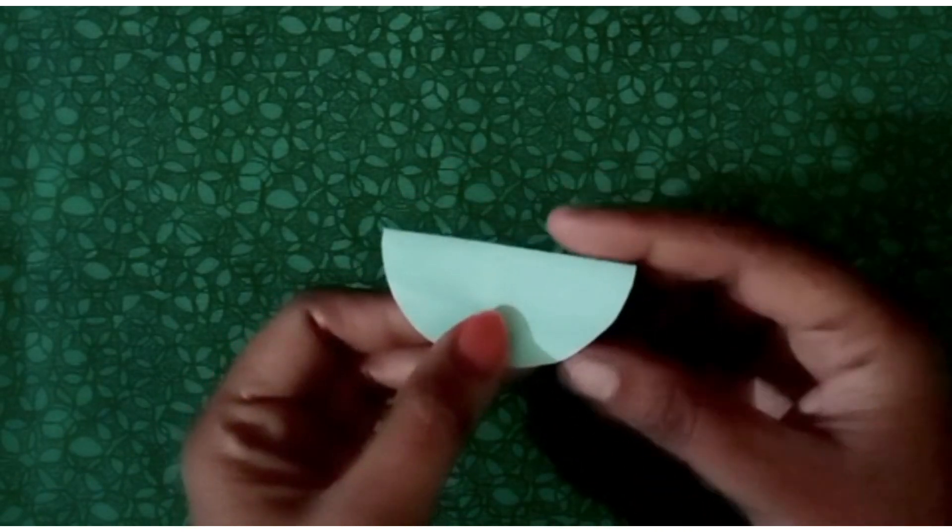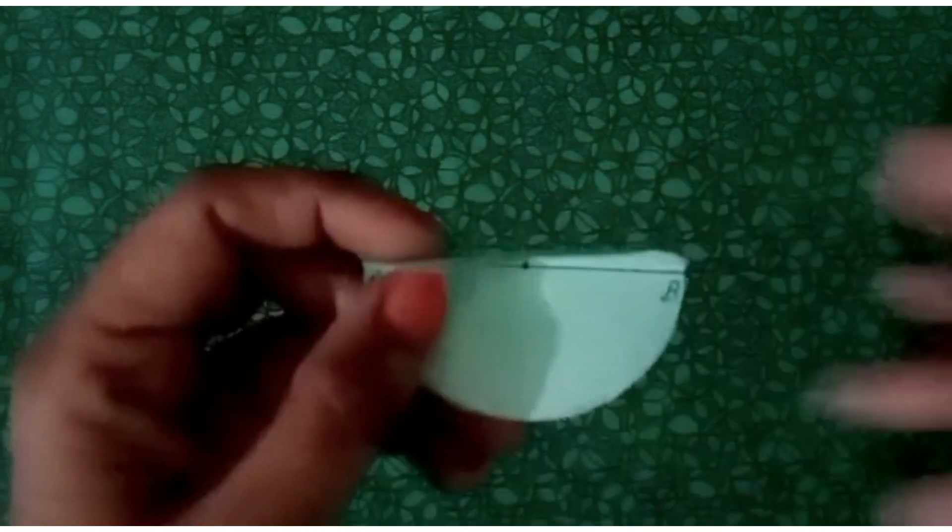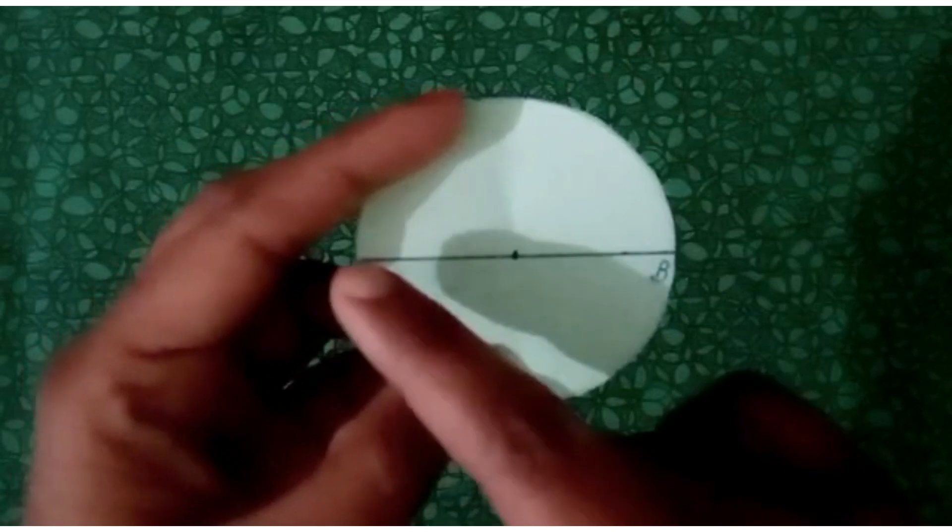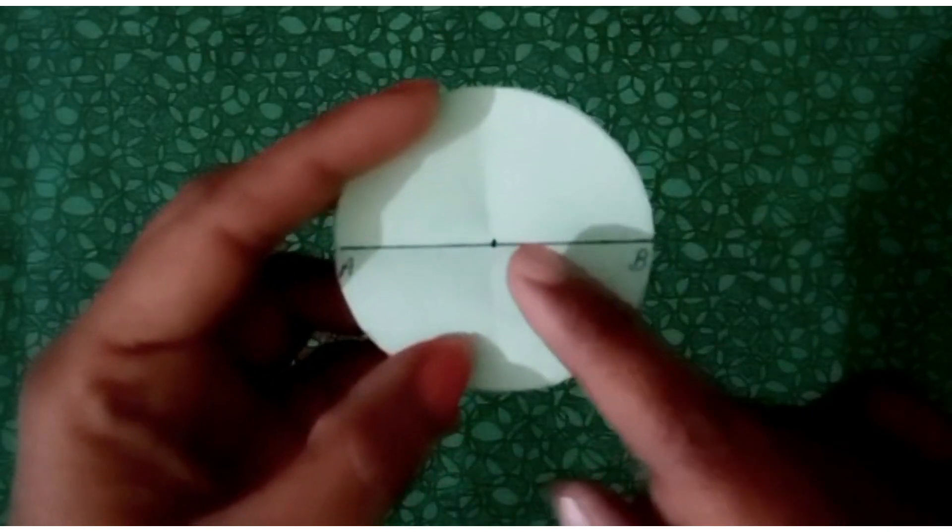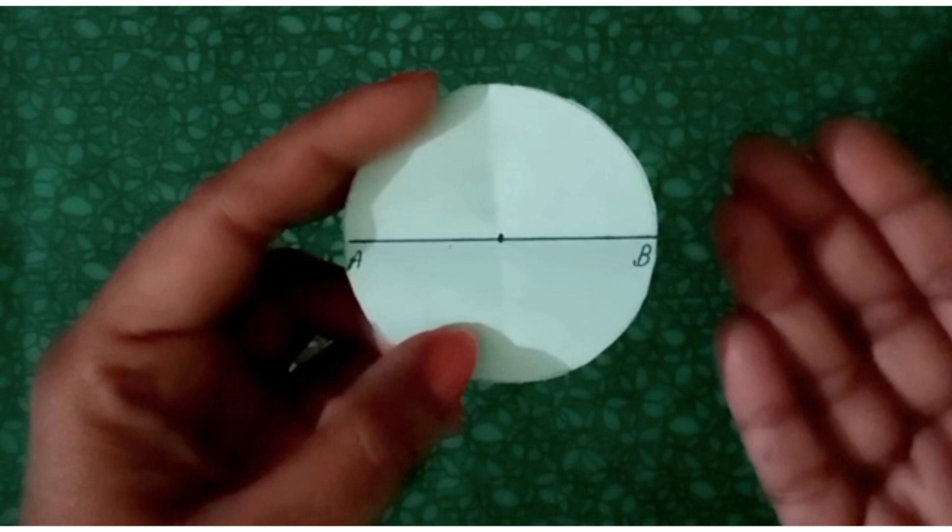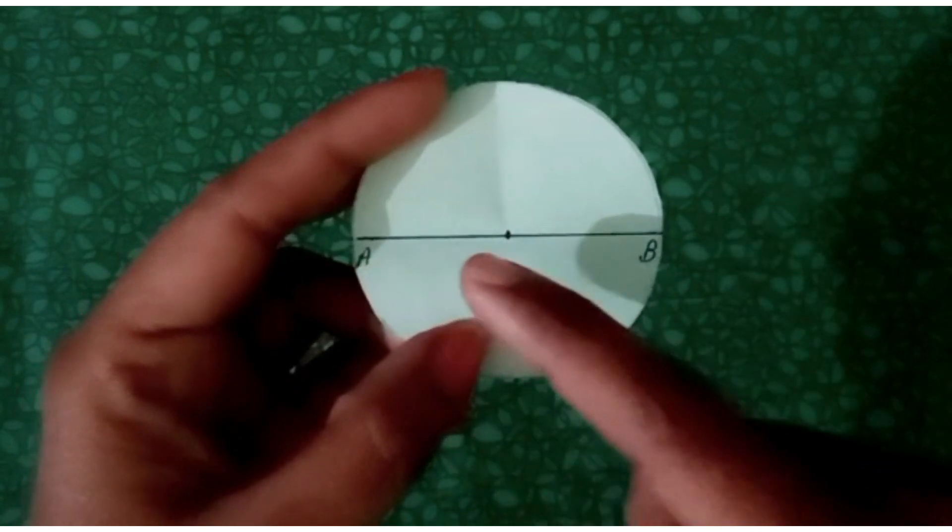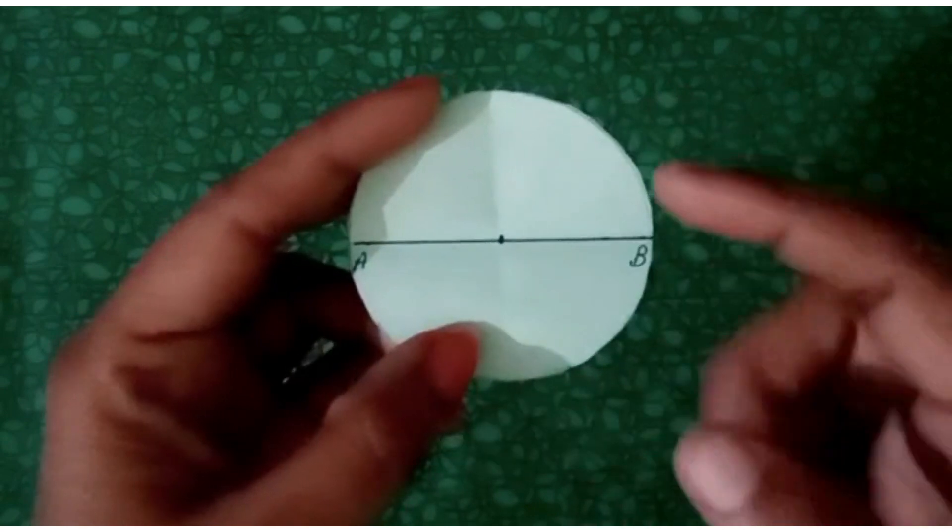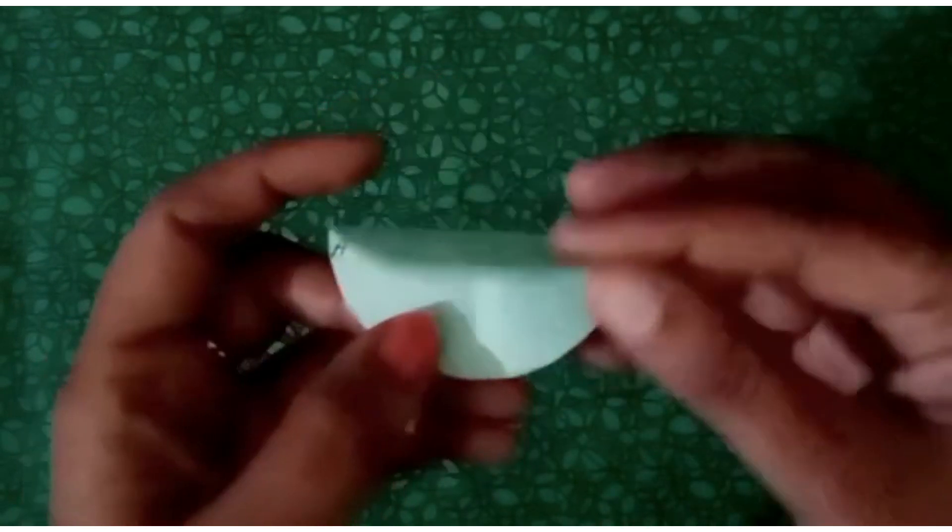Now let's open the paper and see a line segment which passes from the center of the circle and has its endpoints on circumference. And what do we call this line segment which passes from the center of the circle? We call it diameter of the circle.